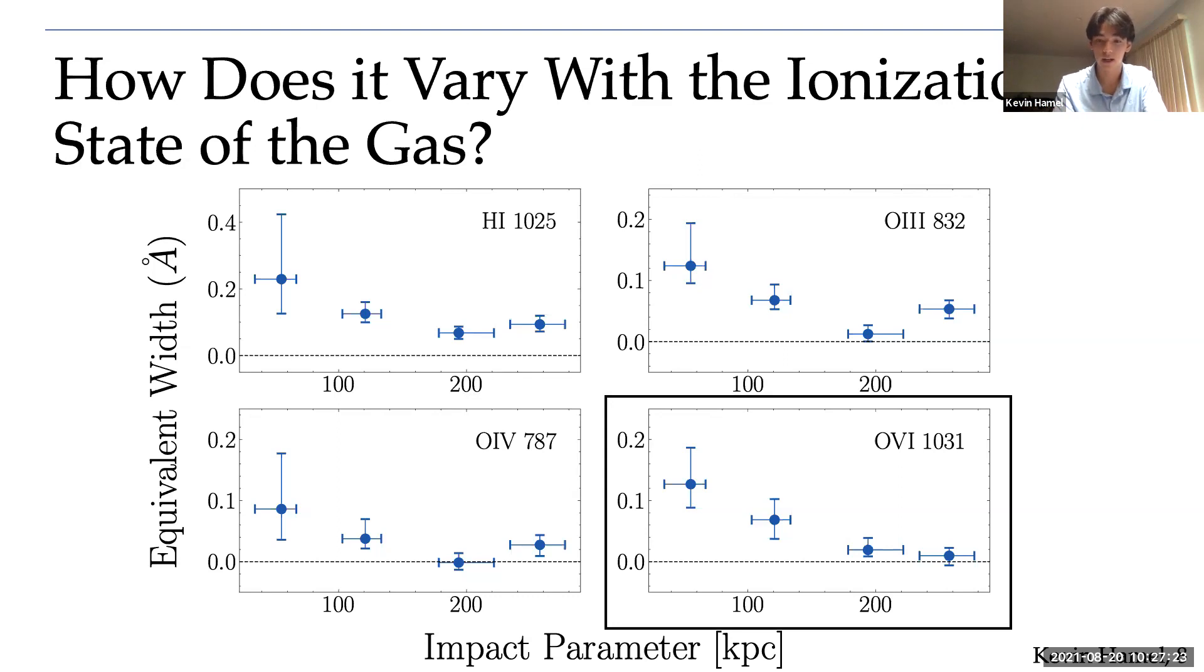Oxygen 6, however, is a high ion, which comes from either extremely hard ionizing radiation or, more likely, hot gas in the CGM that's sitting at a temperature of about 10 to the 5.5 kelvin. Overall, we see that hydrogen is well-detected out to 300 kiloparsecs, but oxygen species are mostly detected within 200 kiloparsecs.